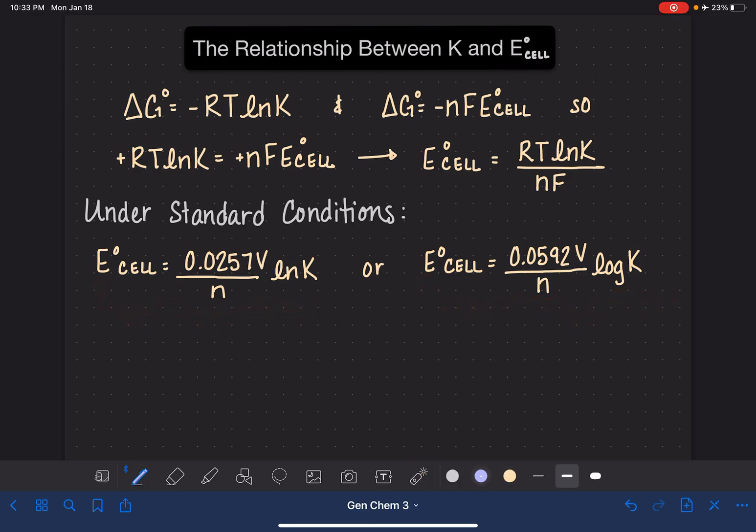Let's practice using these equations. Let's calculate the value of the equilibrium constant K if we have E cell equal to 0.78 volts. That was the example that we had on the previous video. And if the value of N for this reaction is 2.